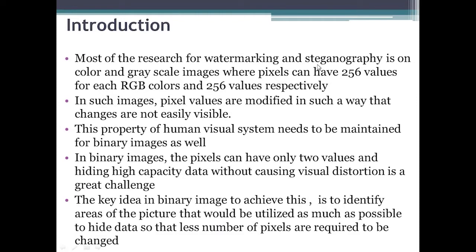Most of the research for watermarking and steganography is on color or grayscale images where pixels can have 256 values for each RGB color and 256 values respectively. So we get a wide range of pixel values for hiding information, and changing a shade a little bit does not cause any visual distortion for the viewer. In such images, pixel values are modified in such a way that changes are not easily visible. This property of the human visual system needs to be maintained even for binary images. But in binary images, the pixels can have only two values, and hiding high-capacity data without causing visual distortion is a great challenge. The key idea in binary image data hiding is to identify areas of the picture that could be utilized as much as possible to hide data, so that fewer pixels are required to be changed.